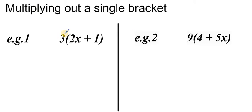The first example here we have 3 and inside the bracket we've got 2x plus 1. So we are going to multiply each term in this bracket by 3.